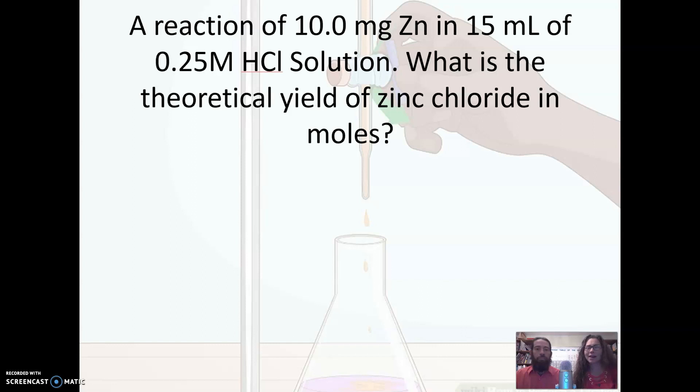And then I also want to point out that we have two different amounts of reactants. We have our zinc and we have an amount, and we also have an amount of our HCl solution. So this is a limiting reactant problem. We're not sure which one of these is going to run out first, but the question is asking a maximum amount or theoretical yield of one of the products. So this really goes back to a limiting reactant problem with solution stoichiometry.